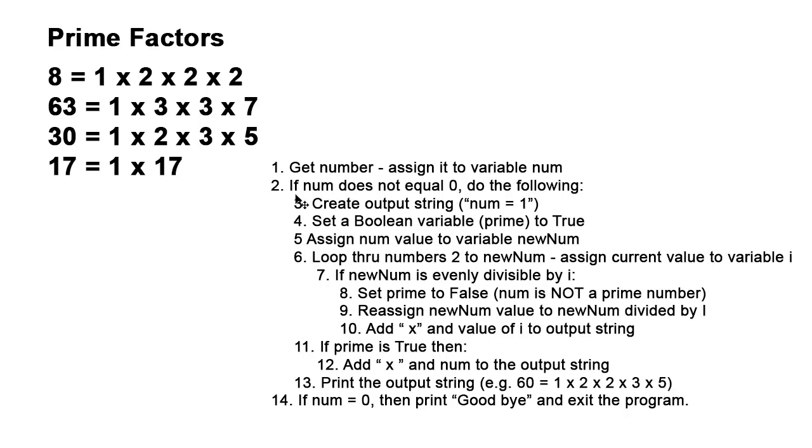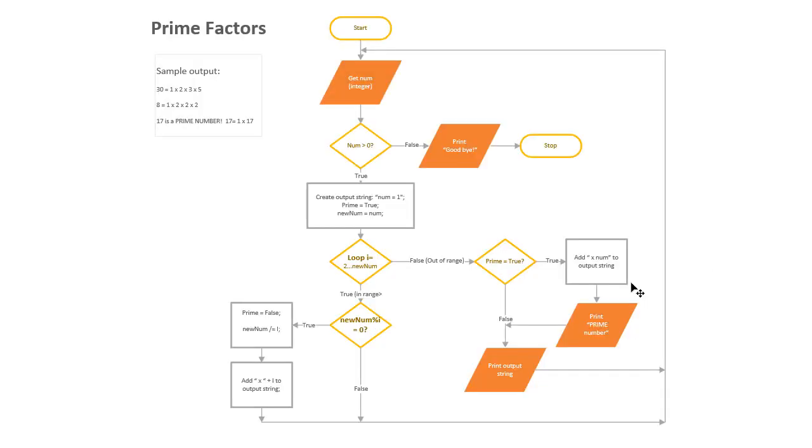They're going to keep adding or entering new numbers and as long as it doesn't equal zero it goes through this process. But if they put in a number that's zero, if num equals zero, we're going to print goodbye and exit the program. So those are the English-like steps we're going to go through. We have to convert into code and we're going to do that in the next video.